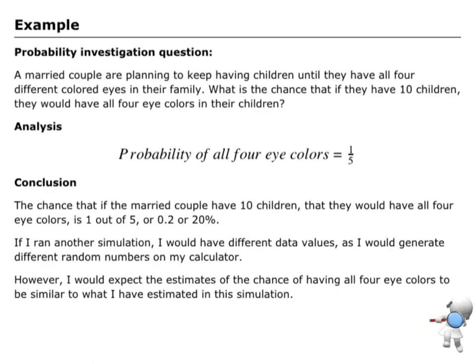As an example of how we would write that up, if we're talking about the scenario where they're going to have 10 children and they want to know what's the chance that they get all four eye colors.